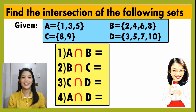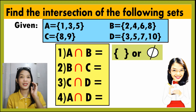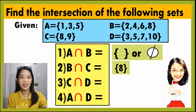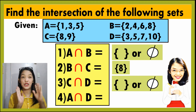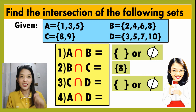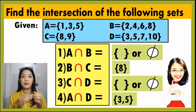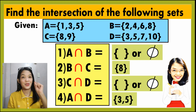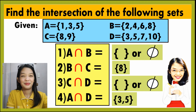Let us now check your answers. Number 1: empty set or null set, because there are no common elements between A and B. For number 2, the answer is 8, because 8 is present in both B and C. For number 3, the answer is empty set or null set, because there are no common elements between C and D. And for the last one, we have 3 and 5, because 3 and 5 can be found in both A and D — they are common to both sets. Check your work. If you got 4 out of 4, then very good!